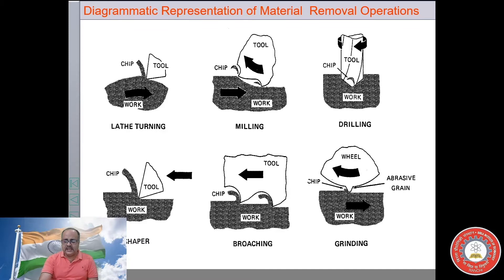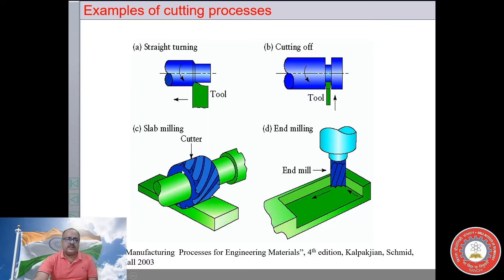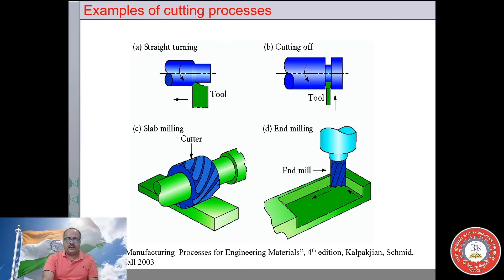Here is a turning case where the workpiece is rotating and the tool is fed in this direction — this is a straight turning operation. In slab milling, the plain milling cutter rotates about an axis and generates a flat surface parallel to the axis of rotation of the cutter. In end milling, we use an end milling cutter whose axis of rotation is perpendicular to the surface which is generated. This covers the different relative movements of the tool and cutter in different machining processes.